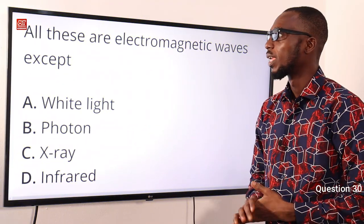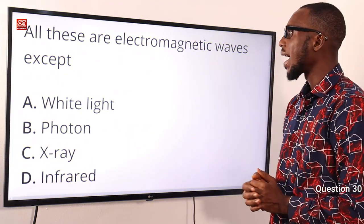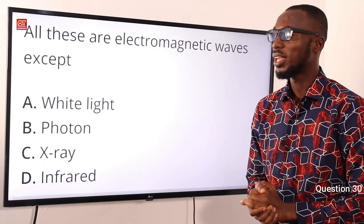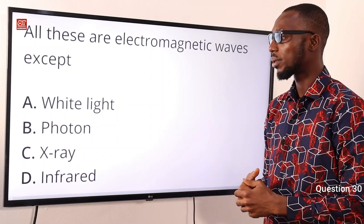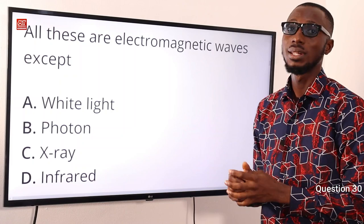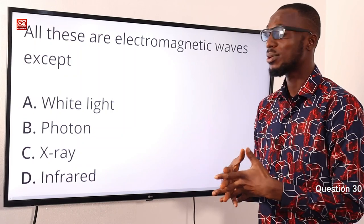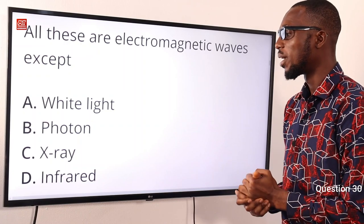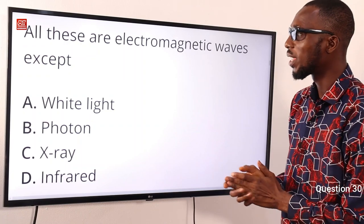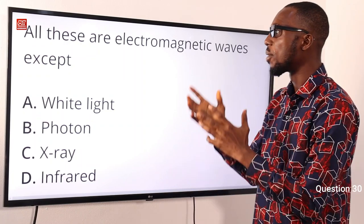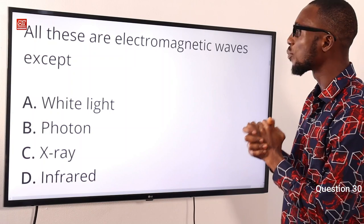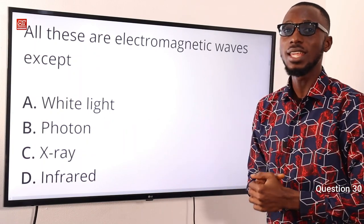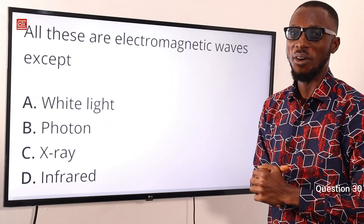Question 30: All these are electromagnetic waves except what? The exception is photon — we know a photon is produced as a result of the action of charged particles. So the correct option is option B — all these are electromagnetic waves except photon.